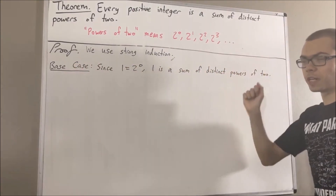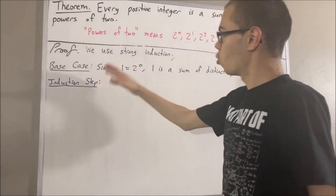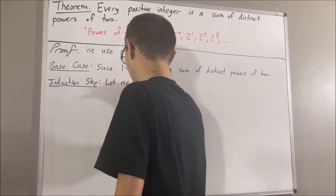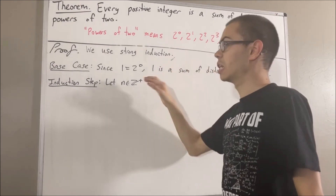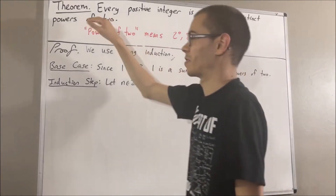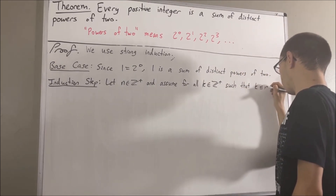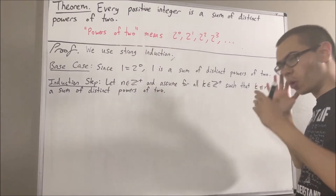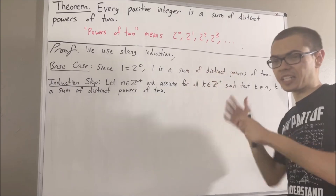Now let's move on to the induction step. In the induction step, we're going to give ourselves an arbitrary positive integer — I'll call it n. And we assume for all positive integers k less than or equal to n, k is a sum of distinct powers of two. The goal of the induction step is to prove that n plus one is a sum of distinct powers of two.